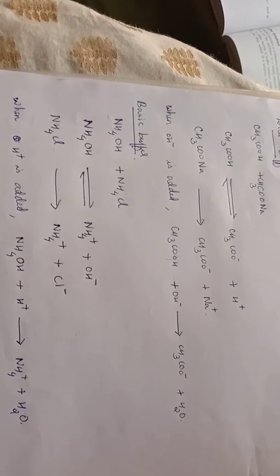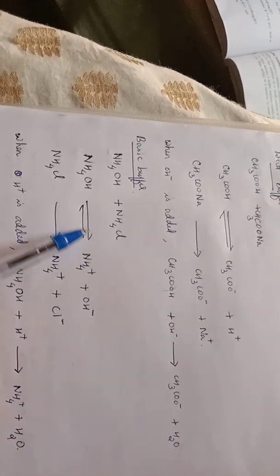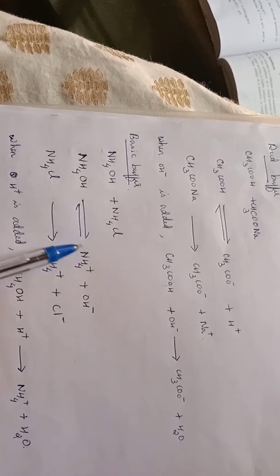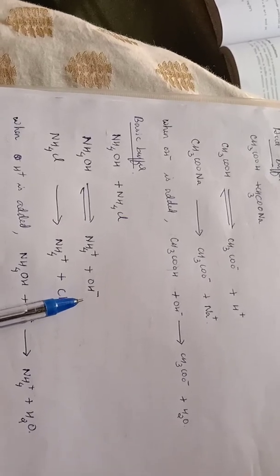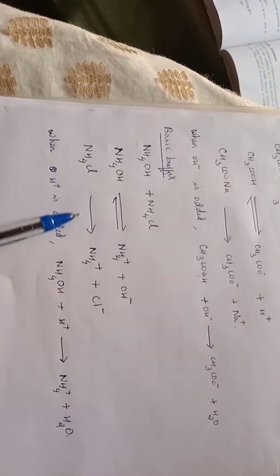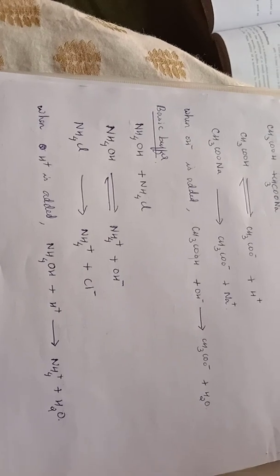The basic buffer is NH4OH plus NH4Cl. NH4OH is a weak base and it partially dissociates. NH4Cl is a salt and it completely dissociates. We will look at the two cases of adding acid and adding base.